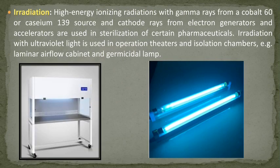Radiation: high energy ionizing radiations with gamma rays from cobalt-60 or cesium-139 sources, and cathode rays from electron generators and accelerators, are used in the sterilization of certain pharmaceuticals. Irradiation with ultraviolet light is used in operation theaters and isolation chambers — for example, laminar airflow cabinets and germicidal lamps. This is the image of the laminar airflow — you can see the blue light of the ultraviolet germicidal lamp and the ultraviolet tube light.